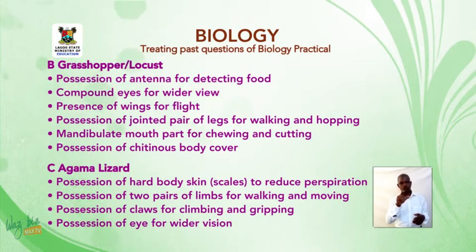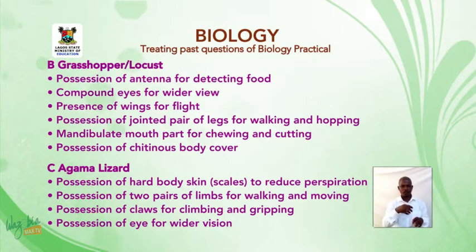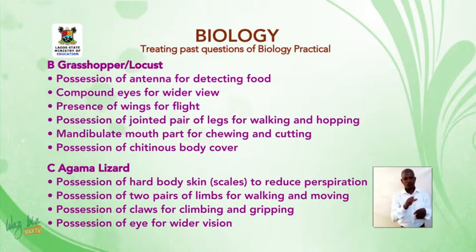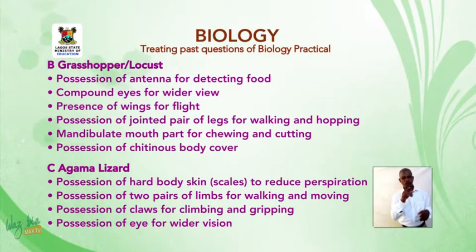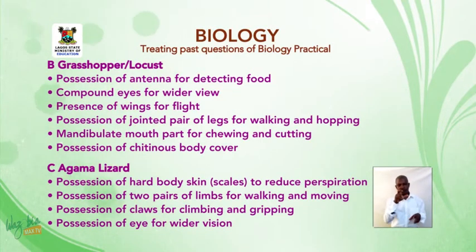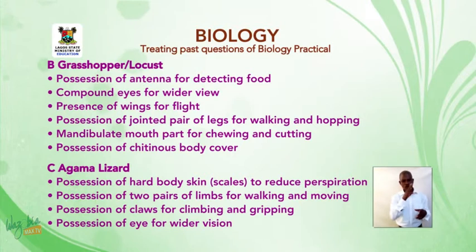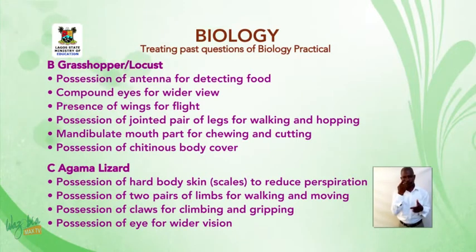For the agama lizard, specimen C, the observable features are: possession of hard body skin or scales to reduce perspiration, possession of two pairs of limbs for walking and moving — note for lizards you write limbs, not legs — possession of claws for climbing and gripping, and possession of eyes for wider vision.